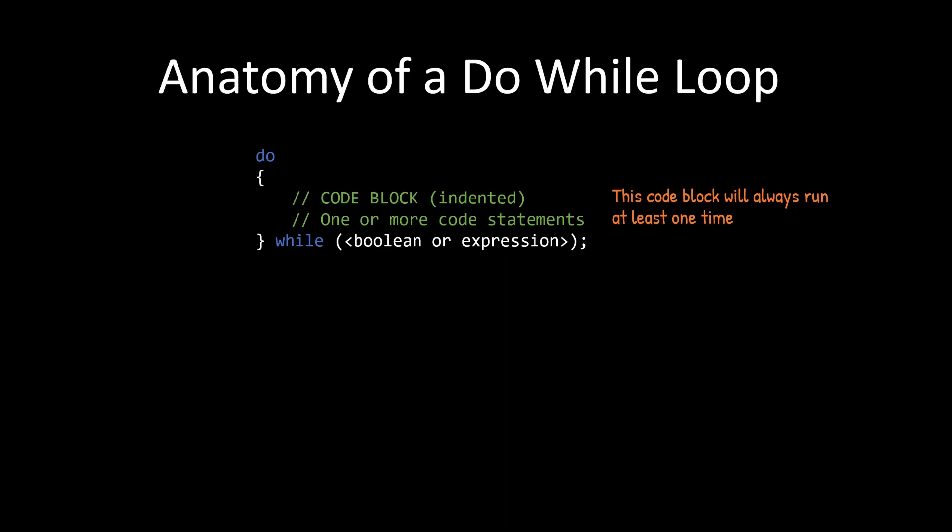So a good example of this is when it's used to prompt users for information. If I want to get the age of a user, I need to ask them at least one time. And if they enter something invalid like ABCD, then I could check the input in the condition and ask them to try again. Now notice that since the do while loop does not end with a code block, it ends with parentheses, so we do have a semicolon at the end, unlike the while loop.